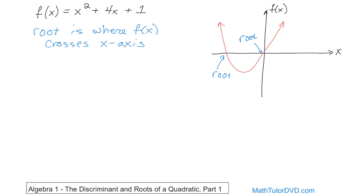So how would you calculate the roots — the crossing points? Anytime you hear the word root, you're looking for these crossing points. To find them, you're looking for all the points where the function f of x is equal to zero. The y values — now called the f of x values — we want to know where they're zero, because at those crossing points the f of x value is zero, right on the axis.